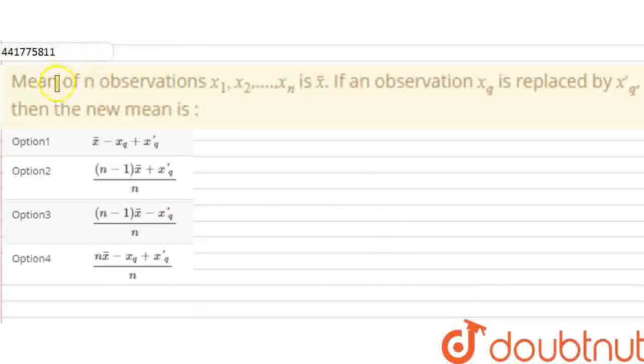Hello friends, what is given in this question? The mean of n observations is given, which is x1, x2, x3. The total of xn observations is given, the mean is x-bar.